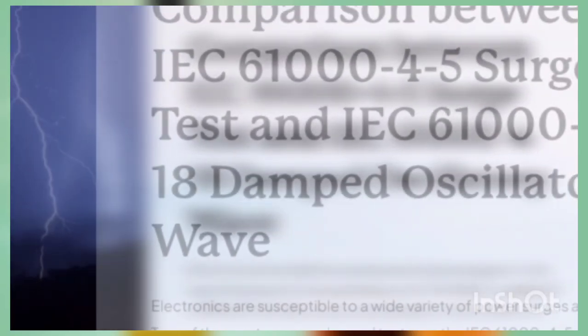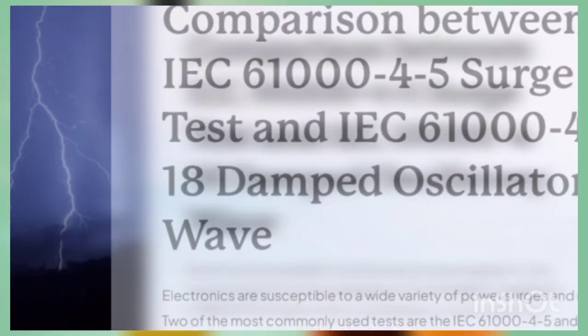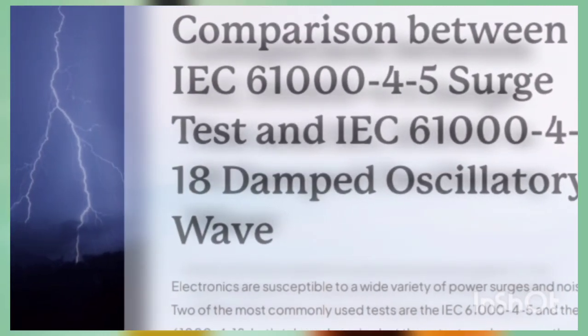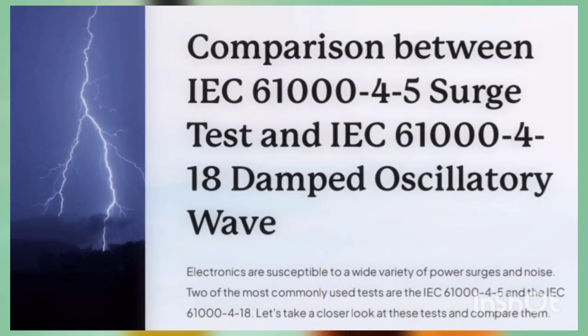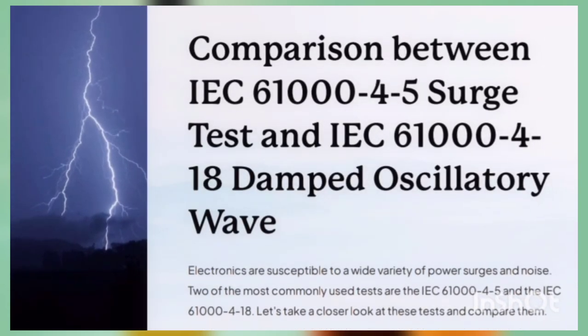Hello everyone, myself Sandeep Dagdeh. Welcome to my YouTube channel EMIMC Test Talk. Today we are going to discuss about the difference between surge and damped oscillatory wave. The standard for surge is IEC 61004-5 and the standard for damped oscillatory wave is IEC 61004-18.